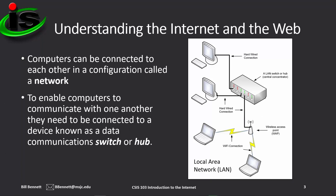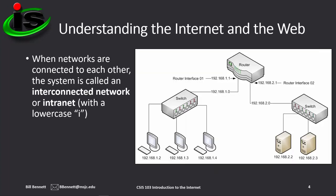Before we get to the differences between the Internet and the web, you must first understand what a data communications network is. Computers can be connected to each other in a configuration called a network. To enable computers to communicate with one another, they need to be connected to a device known as a data communications switch or hub. When networks are connected to each other, the system is called an interconnected network or intranet with a lowercase i.